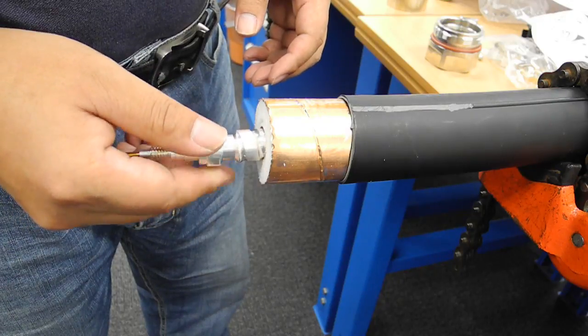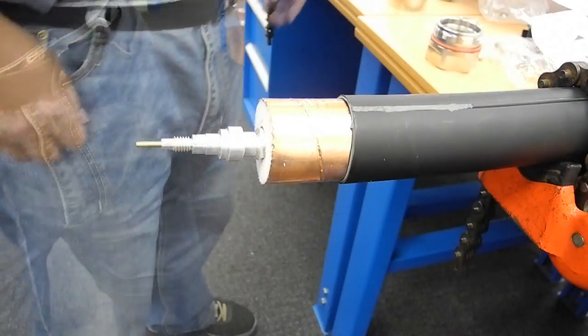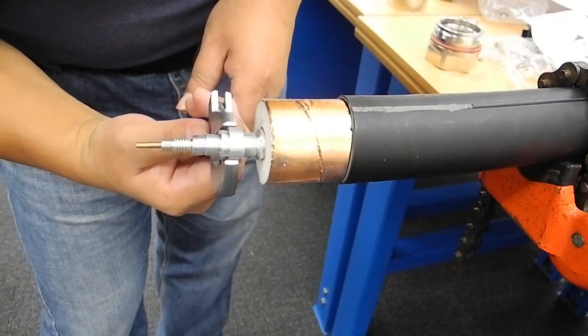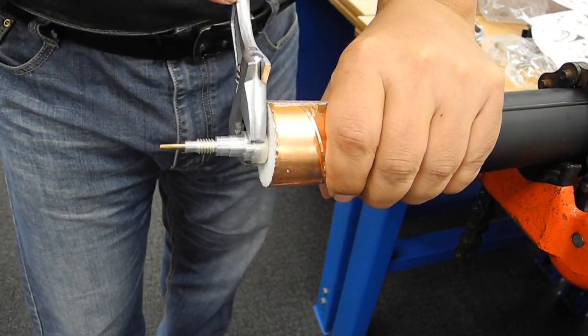Fit the inner assembly into the inner conductor and screw in until finger tight. Use an adjustable wrench to tighten the inner assembly the rest of the way. Be careful not to over torque the assembly.